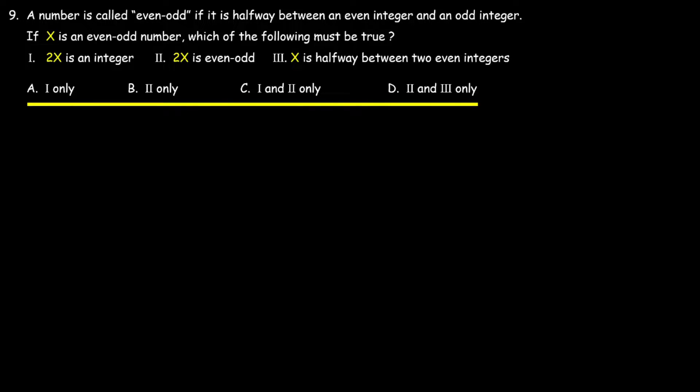A number is called even-odd if it is halfway between an even integer and an odd integer. If x is an even-odd number, which of the following must be true? Statement 1: 2x is an integer. Statement 2: 2x is even-odd. Statement 3: x is halfway between two even integers.